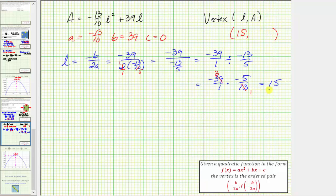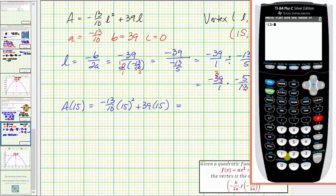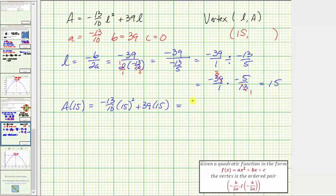Now let's find the a coordinate by substituting L equals 15 into our area function. A(15) equals -13/10 times 15² plus 39 times 15. We'll evaluate this using the calculator, which gives us 292.5. This means 292.5 square feet is the maximum area.